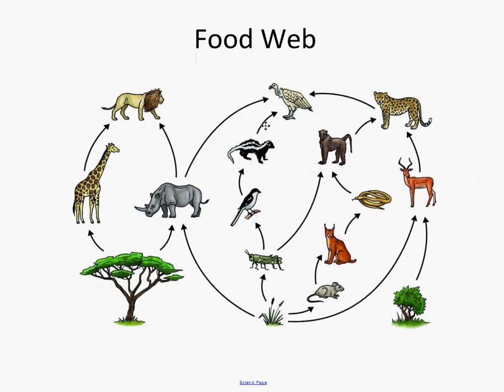Communities are often represented by diagrams called food webs — sometimes called rivet models, but that term is less common now. A food web shows how different organisms are interacting with one another, or who's eating who. A food web shows us more than that though; it shows us the importance of each species to the entirety of the ecosystem. For example, take a species like the grasshopper.